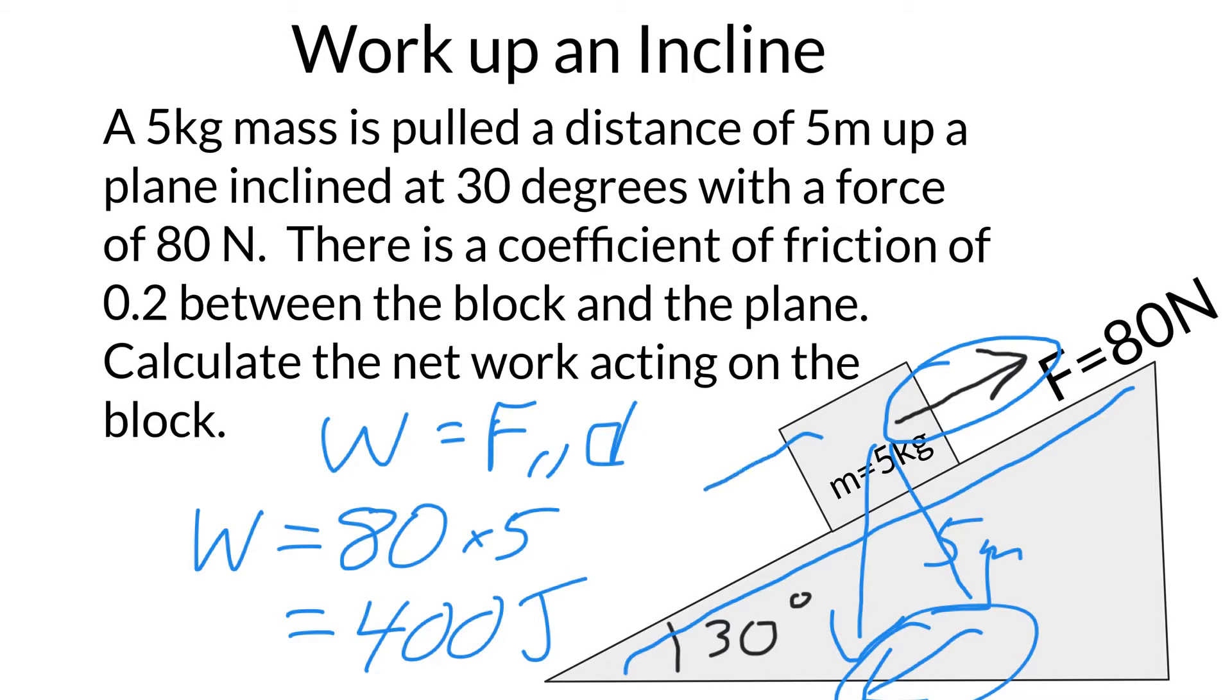So recall, this amount going this way is going to be that component of gravity, which is the weight, mg, and then we're just going to multiply by the sine of the angle of the ramp. So sine of 30 degrees.